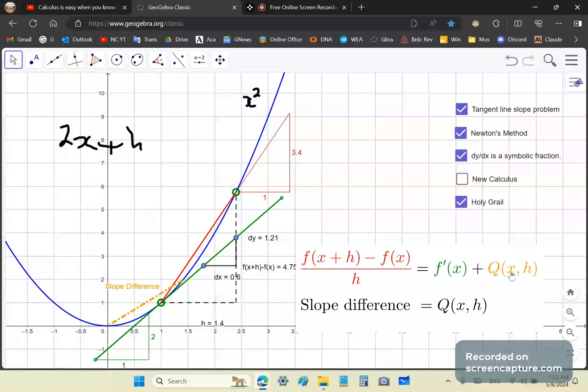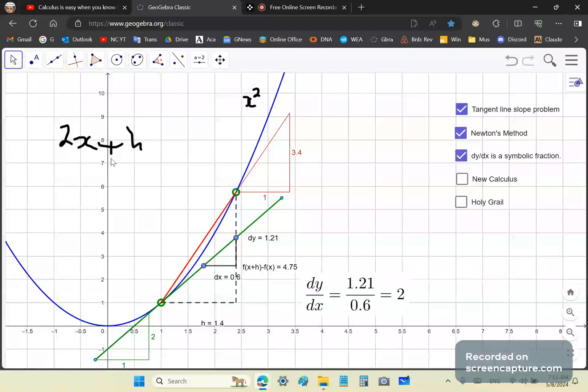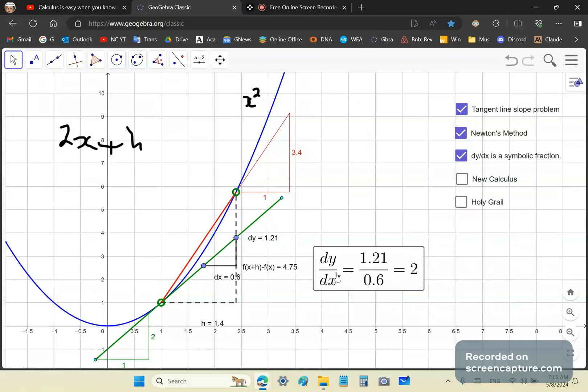is the derivative. This 2x is the derivative and h is the slope difference. That's all it is. And dy, dx are differentials which are numbers by the way.